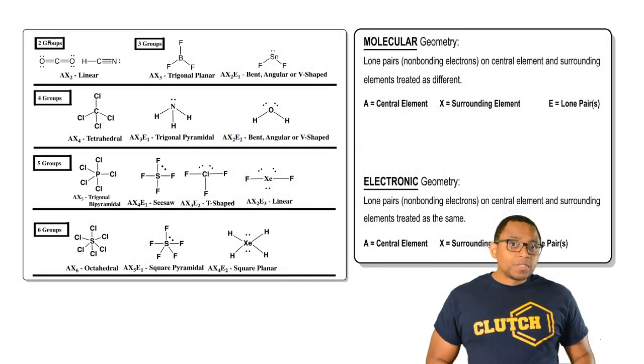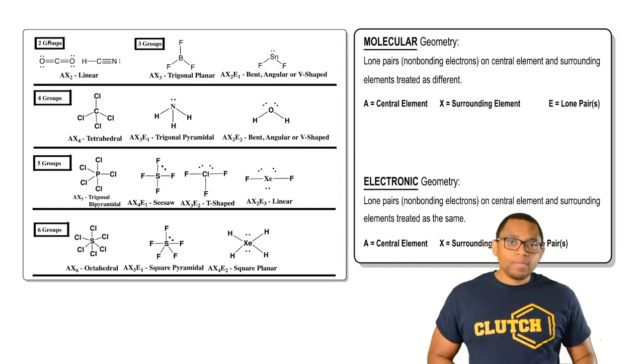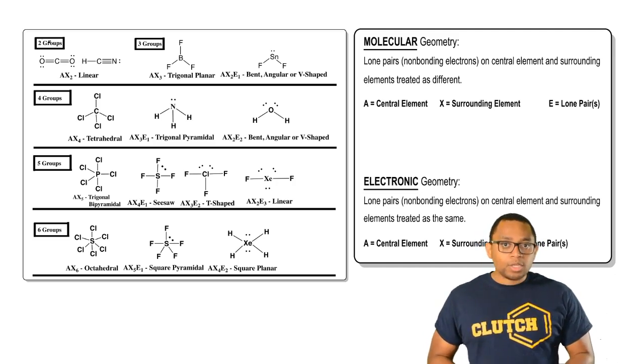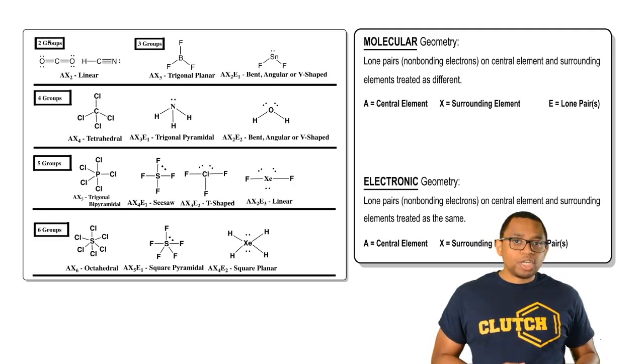When it comes to drawing any type of Lewis dot structure, we need to realize that there are two geometries involved. We have our molecular geometry, which is usually coined as our real shape of the molecule, and we have our electronic geometry, which is sometimes called the orbital shape.